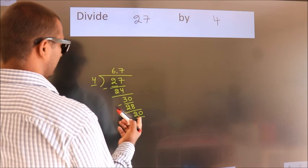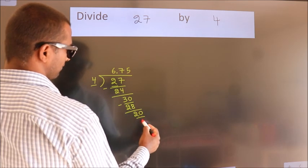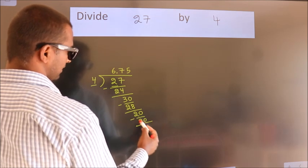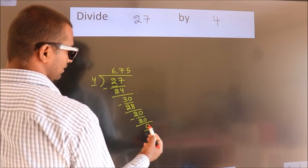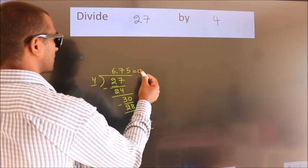When do we get 20? In 4 table, 4, 5, 20. Now, we subtract. We get 0. We got remainder 0. So, this is our quotient.